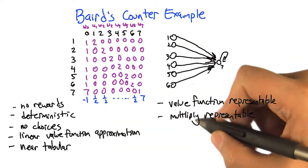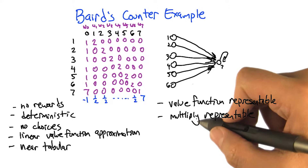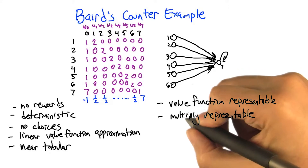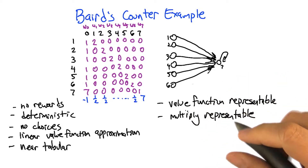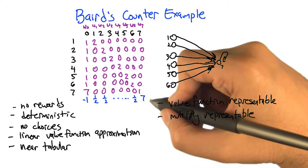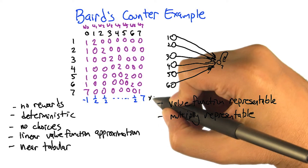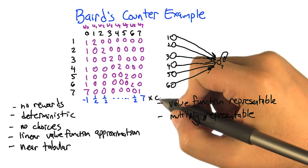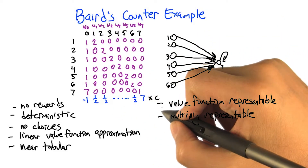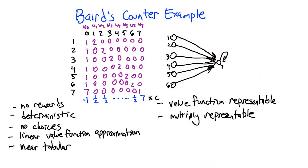So not only can we represent the value function, but we can represent it in multiple different ways — it is multiply representable, representable in at least two ways. Actually, an infinite number of ways, because you could take that vector, minus one, one half, one half, one half, one half, one half, seven, and multiply it by any constant, including zero, and it'll work. Multiplying it by zero, you get that first weight vector. So in fact, there's an infinite set of weight vectors that all capture the optimal value function, which is all zeros.